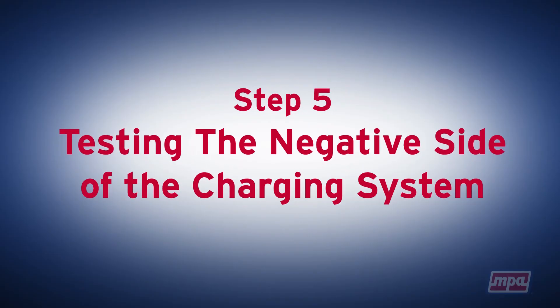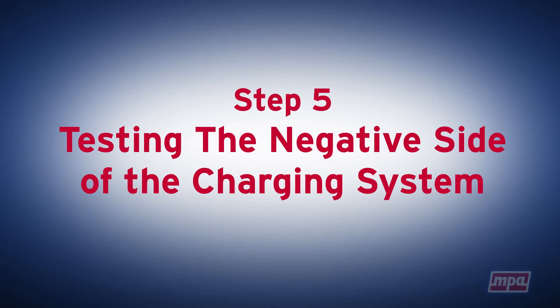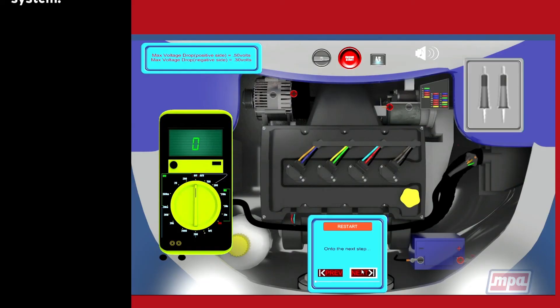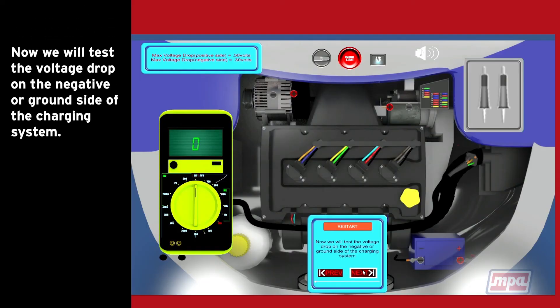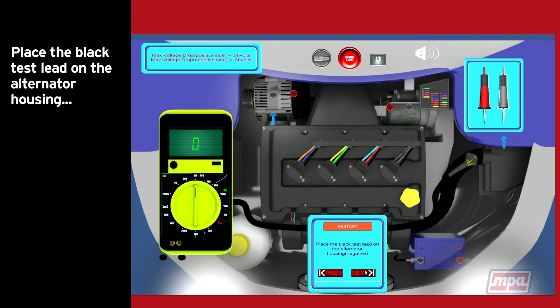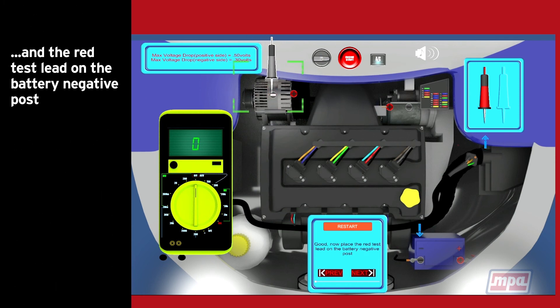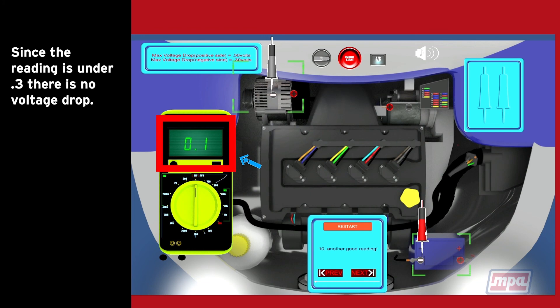Step 5: Testing the negative side of the charging system. Now we will test the voltage drop on the negative or ground side of the charging system. Place the black test lead on the alternator housing and the red test lead on the battery negative post. Since the reading is under 0.3, there is no voltage drop.